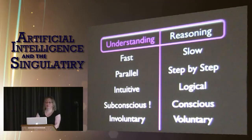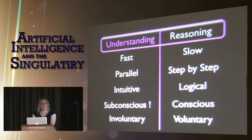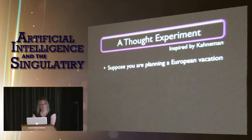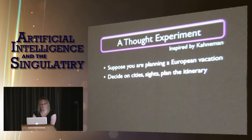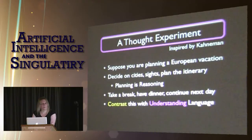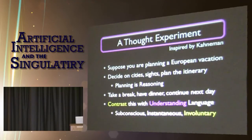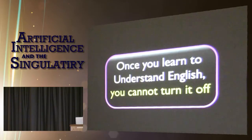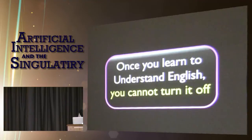We can make experiments based on any of these properties. There's one that has a very fast test — we can use the voluntary/involuntary distinction for a thought experiment. Suppose you're planning a European vacation: you need to decide on the cities to visit and make the itinerary. Planning is a very typical form of reasoning — you can take a break, have dinner, continue the next day. Contrast this with understanding language: it's subconscious, instantaneous, and involuntary. Once you learn to understand English, you cannot turn it off. This is enough to convince me that dual process theory is correct.